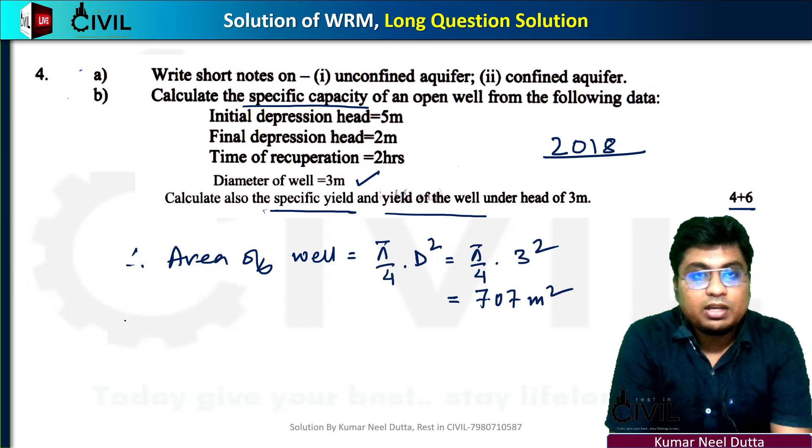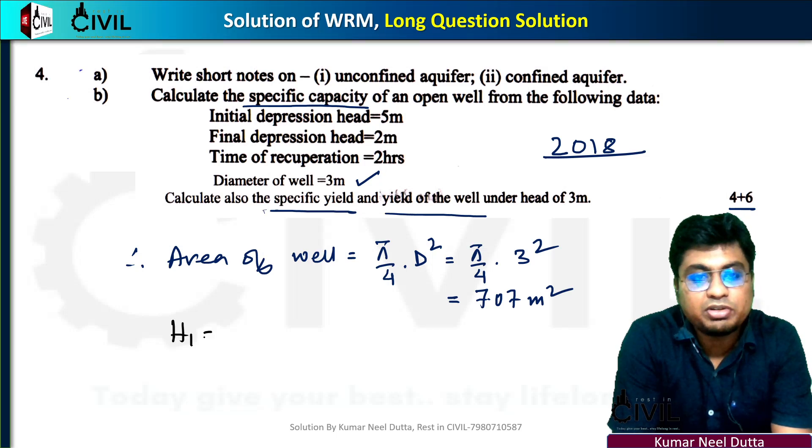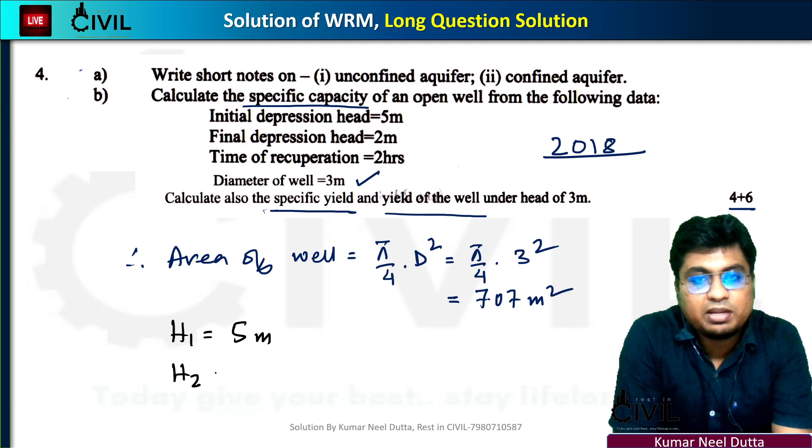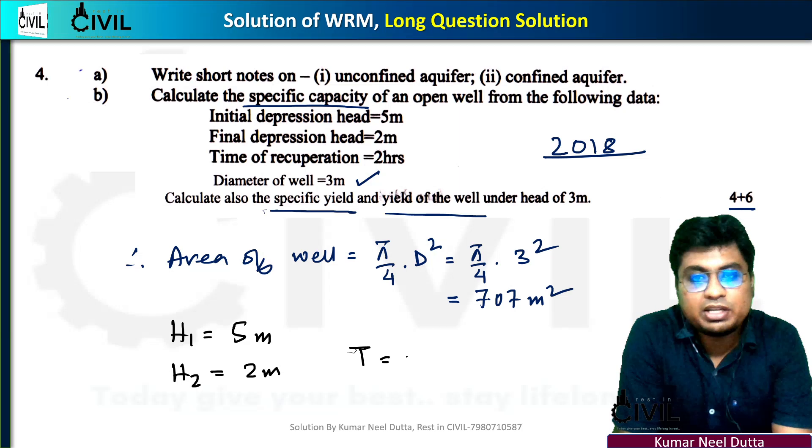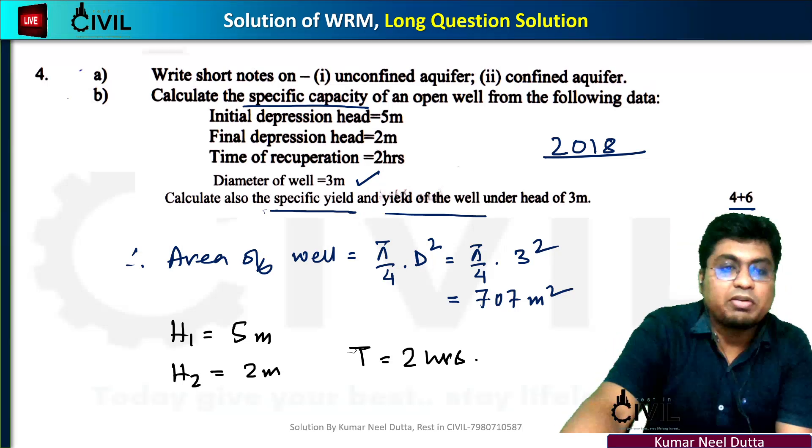Next, we calculate specific capacity. We have initial head H1 is 5 meters, final head H2 is 2 meters, and time is 2 hours from the given data.